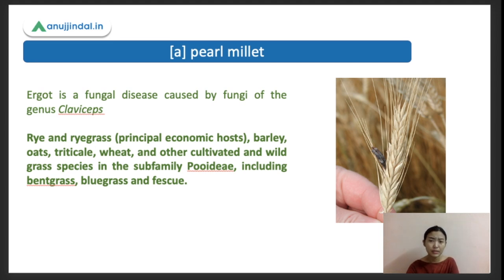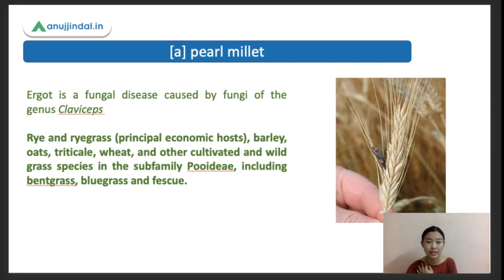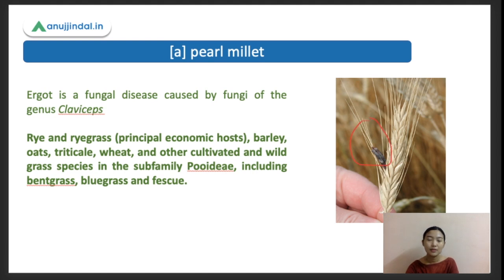The first symptom of ergot infection is the presence of honeydew - a sticky, yellow, sugary substance or solution which forms in the plants, consisting of host sap mixed with conidia, which is the primary infection of this fungus. The secreted infected honeydew later eventually becomes purplish-black in color, forming a purplish-black structure in the crop. You can see this distinct specific characteristic symptom in the picture - this purplish, blackish color.